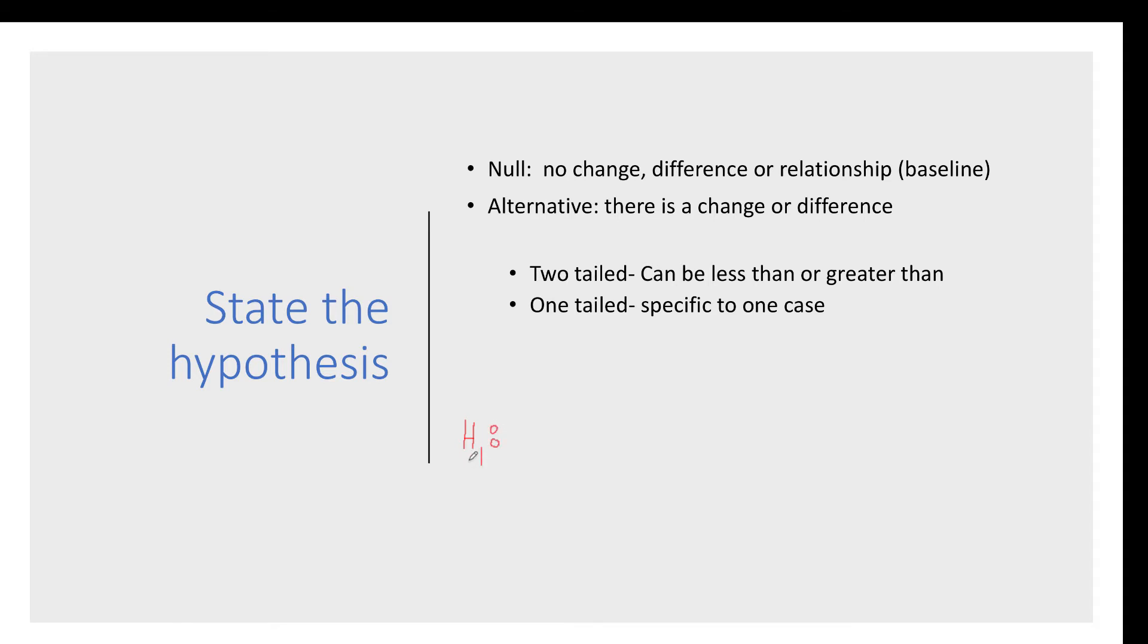The alternative hypothesis is denoted with an H sub 1, or a one below. And this is the mean is different than 830. And I'm going to use the decimal, 30 seconds is half a minute, or 8.5 minutes per mile. Now, the null hypothesis deals with equality.